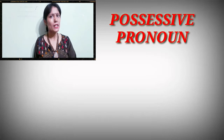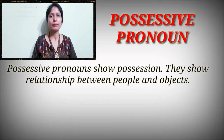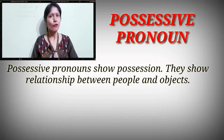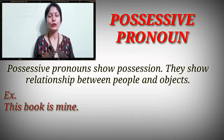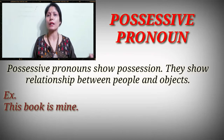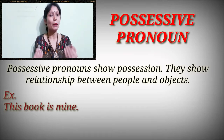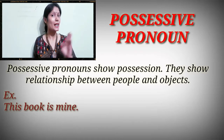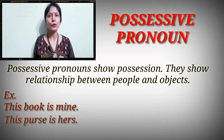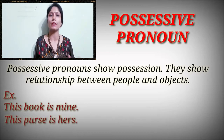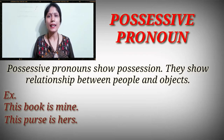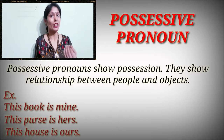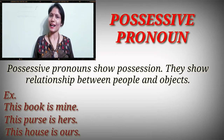Possessive pronouns show possession — they show the relationship between people and objects. For example, when I say 'this book is mine,' 'mine' is a possessive pronoun — I am showing the relationship between me and the book. When I say 'this purse is hers,' I want to show the relationship between her and the purse. When I say 'this house is ours,' there is a relationship between we and the house.